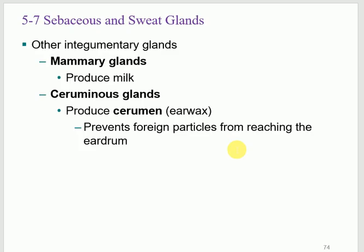Other accessory glands include mammary glands — located in the breast, they produce milk. They become more active during pregnancy. Ceruminous glands secrete cerumen — that's ear wax — to trap particles and prevent them from reaching the very delicate eardrum. The eardrum is fragile and must be protected, which is the purpose of the ear wax.